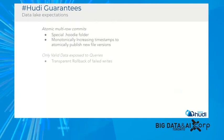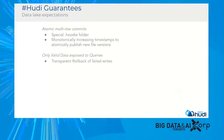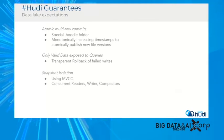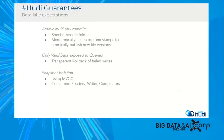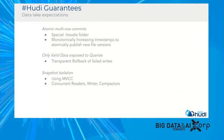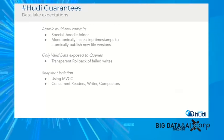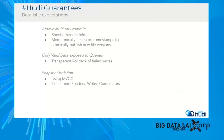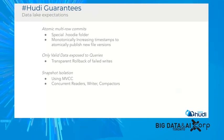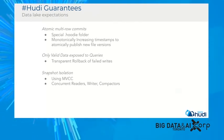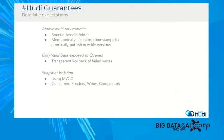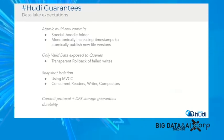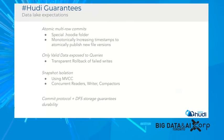What Hudi guarantees is essentially the ACID semantics expected from a data lake. We provide atomic multi-row commits using a special Hudi folder under your table with monotonically increasing timestamps. We only expose valid data to queries, and any data that fails is rolled back transparently. We provide snapshot isolation using multi-version concurrency control, with concurrent readers, concurrent compactors, and a single writer currently. Durability guarantees come from our commit protocol as well as the distributed file system of your choice.